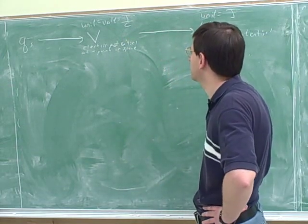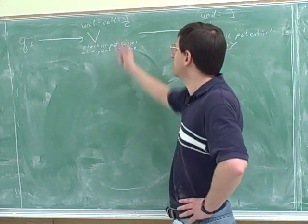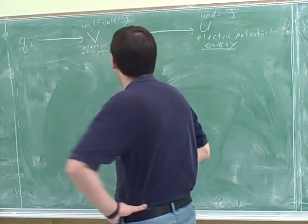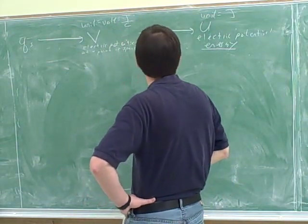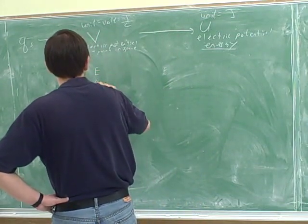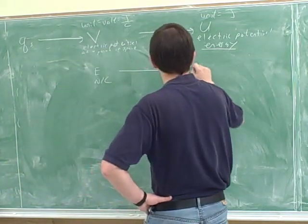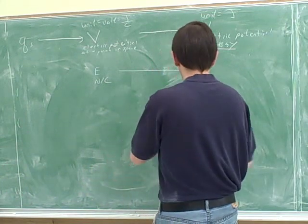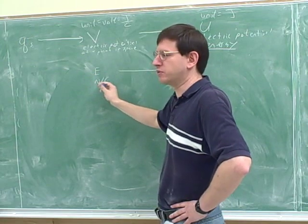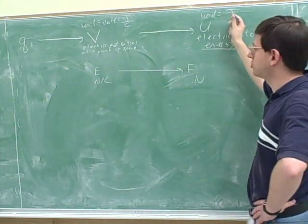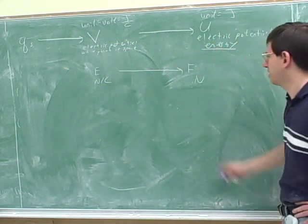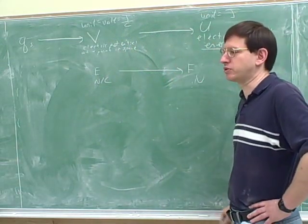And this is, again, one of the biggest mistakes students make in this course. They never learn what a volt is, and then they never get any intuition for what it means. Remember, and you should be able to see the analogy here. Force is in newtons and field is in newtons per coulomb. Well, energy is in joules and potential is in joules per coulomb. So in both cases, we just take the kind of basic unit and divide by coulombs.